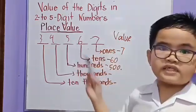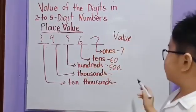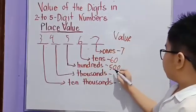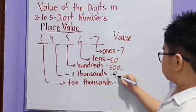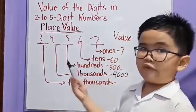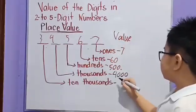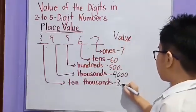What is the value of 4? You are right! It's 4,000. What is the value of 3? You are right! It's 30,000.